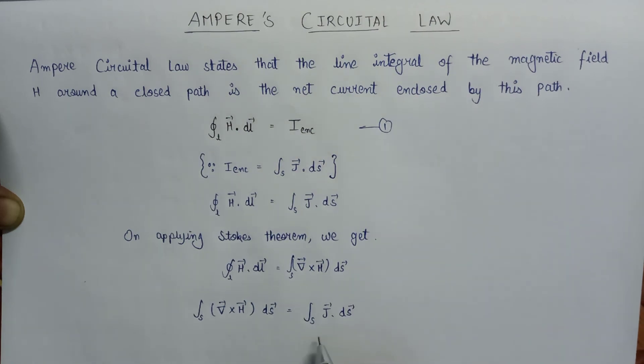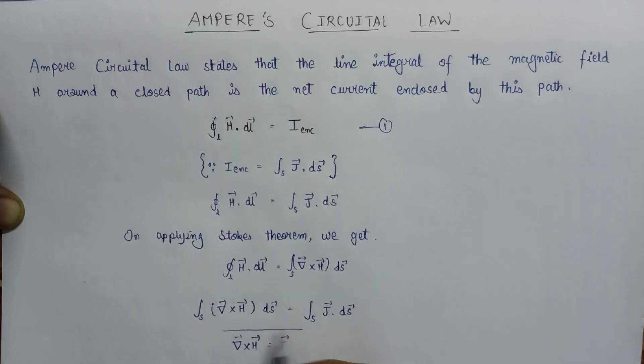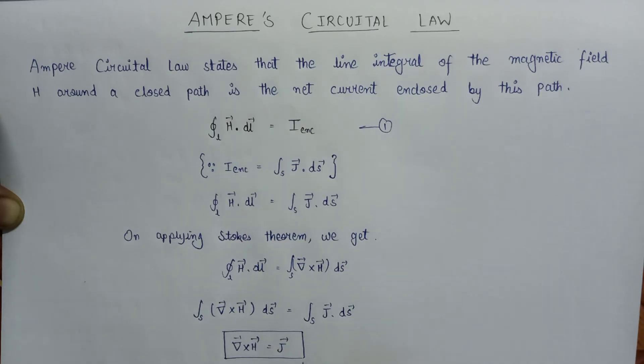If you want to remove the integration, it finally becomes del cross H equals J. This is the final expression given by Ampere's Circuital Law in the point form.